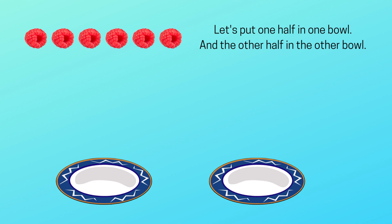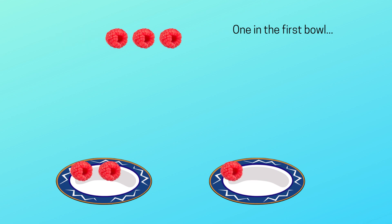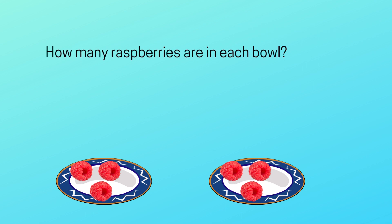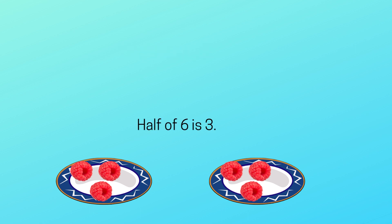Let's put one half in one bowl and the other half in the other bowl. One in the first bowl, one in the second bowl, alternating until all six are distributed. How many raspberries are in each bowl? Three. That's right, three. Half of six is three.